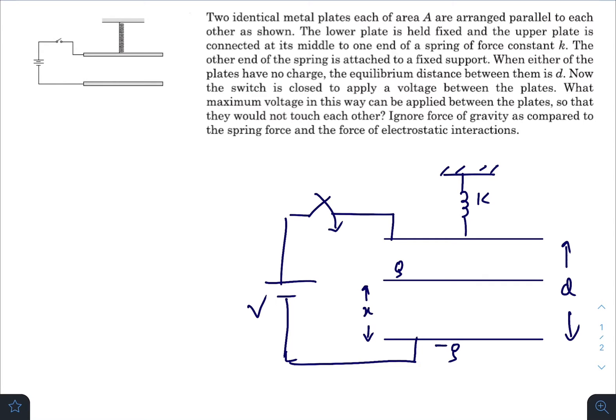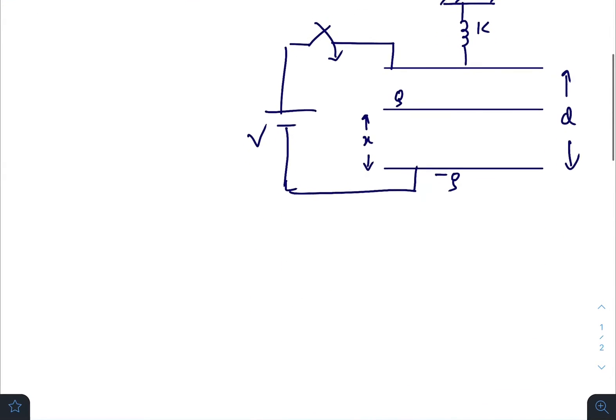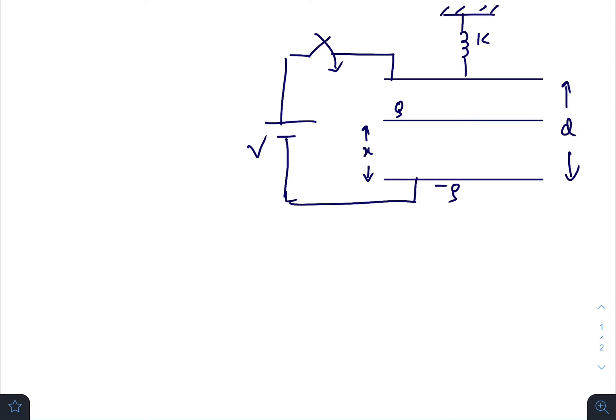We know that work done on the system by all the external forces is utilized to increase its potential energy. As we have considered that the mass of the upper plate is negligible, we will not consider kinetic energy here. Work done by the battery on a capacitor is not completely utilized, half of the energy is utilized because the rest half is lost due to heat.